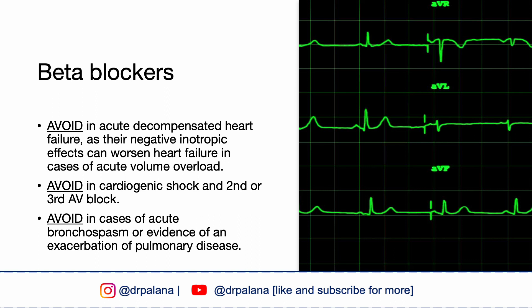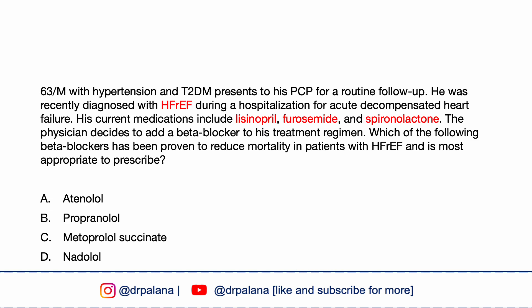A 63-year-old male patient with hypertension and type 2 diabetes presents for routine follow-up. He was recently diagnosed with HFrEF during a hospitalization for acute decompensated heart failure. His current medications include lisinopril, furosemide, and spironolactone. The physician decides to add a beta blocker. Which of the following beta blockers has been proven to reduce mortality in HFrEF? Atenolol, propranolol, metoprolol succinate, or nadolol?